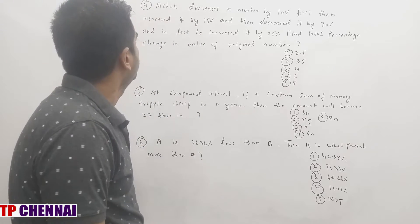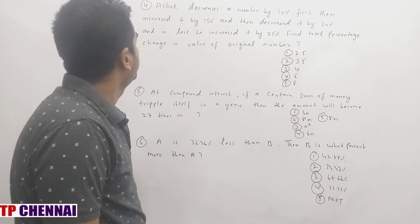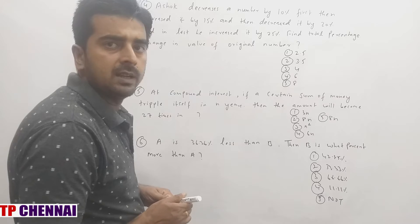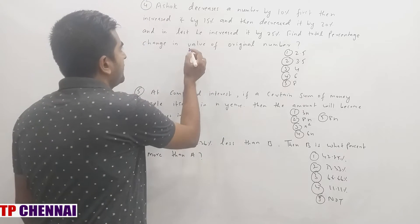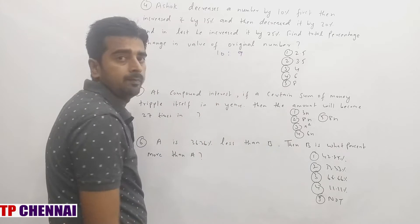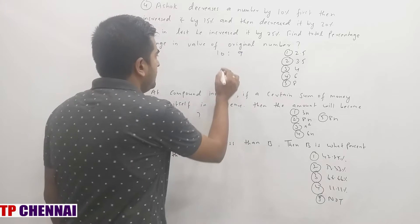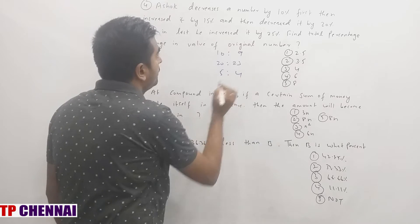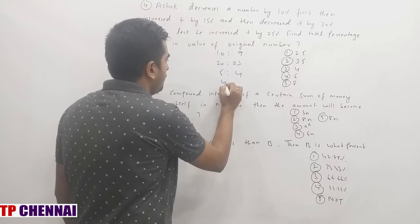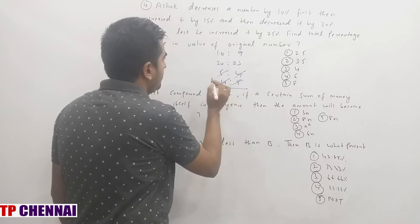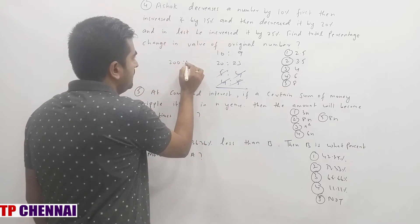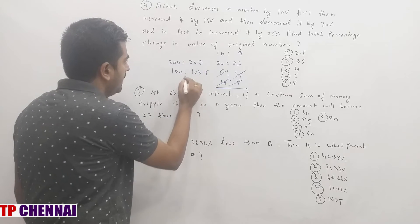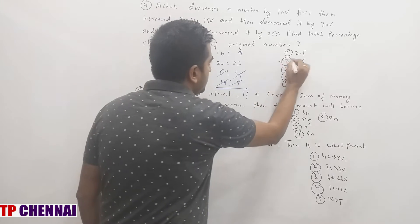Fourth question: A number is decreased by 10%, then increased by 15%, then decreased by 20%, then increased by 25%. Find total percentage change. 10% fraction is 1/10, so initial 10 becomes 9. Increase 15% (3/20): base 20 becomes 23. Decrease 20% (1/5): 5 becomes 4. Increase 25% (1/4). After cancellation, 200 becomes 207, or 100 becomes 103.5 — an increase of 3.5%, which is the second option.